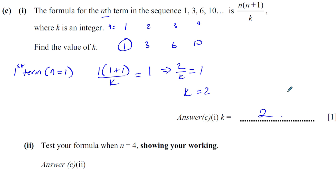Then it says test your formula when n equals 4, showing your working. So now the formula that we've got is n times n plus 1 over 2. When n equals 4, you have 4 times 4 plus 1 over 2.